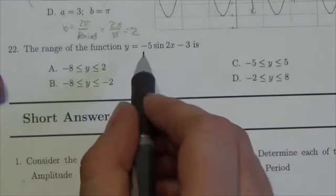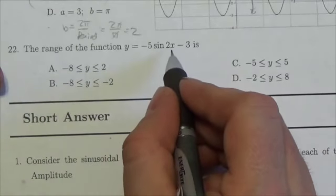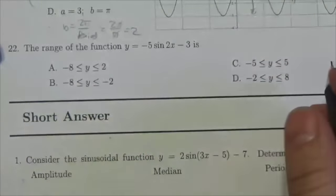Okay, so this question says that the range of the function y equals negative 5 sine of 2x minus 3 is. So which one of these is the range here?